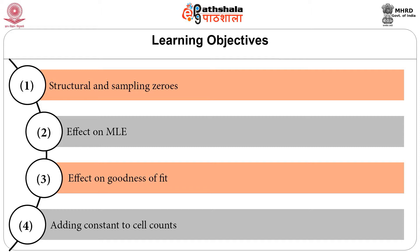Next, we will look at the consequences of sampling zeros on ML estimation. After this, we will examine the consequences on various measures of goodness-of-fit. Finally, we shall look at the popular but ad hoc technique of getting around the problem by adding a constant to the various zero cell counts.